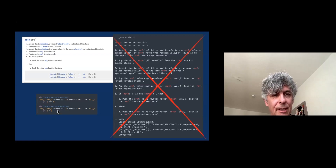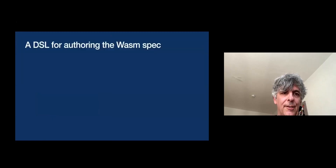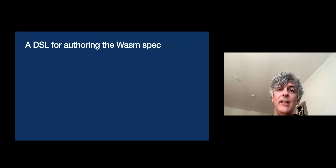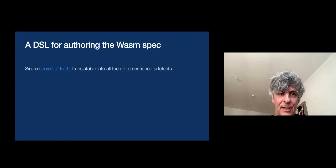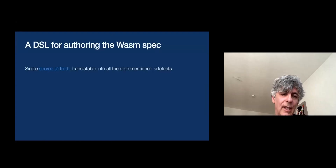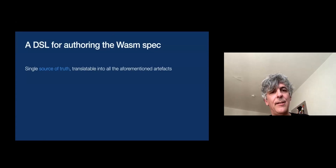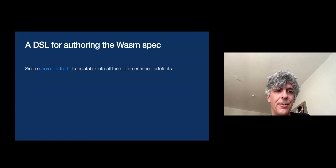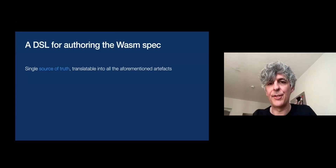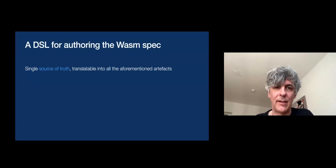SpecTec is the idea of putting away with writing all this manual stuff and instead just writing these couple of lines for the same thing. Essentially you're just writing out the formal rules in a nice ASCII that you can actually see and read on screen, and then everything else is generated from it — including in particular all the prose, but also all the cross-references. All the blue hyperlinks had to be written manually before, but now they're all generated automatically.